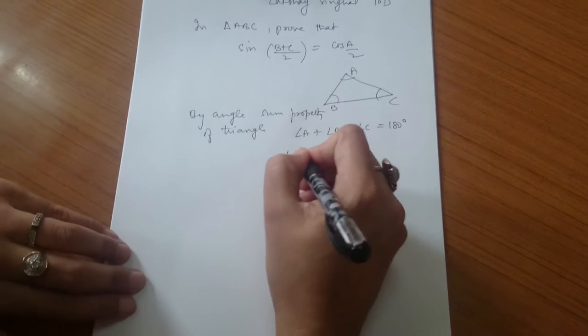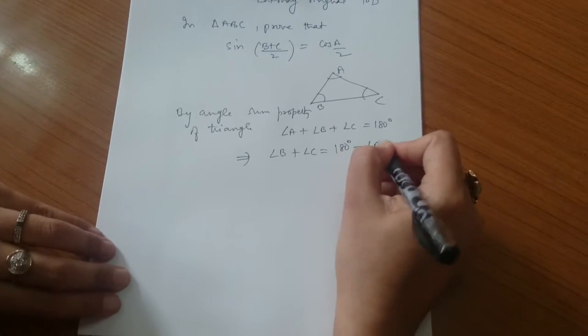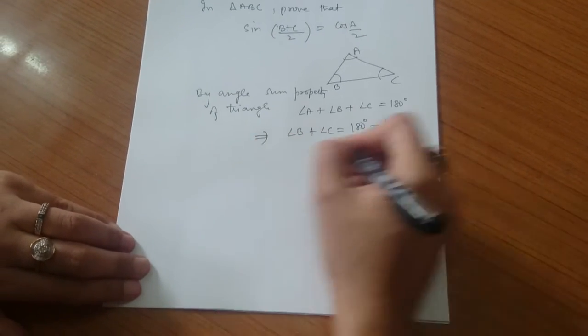By this, we will get the equation that angle B plus angle C equals 180 degrees minus angle A. This we'll take as equation 1.